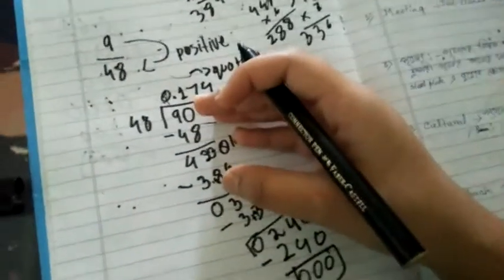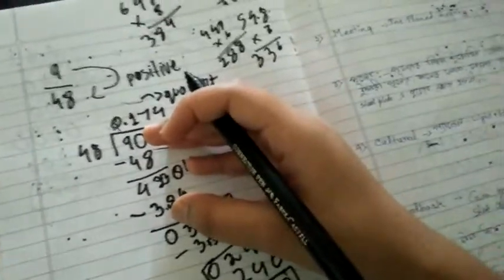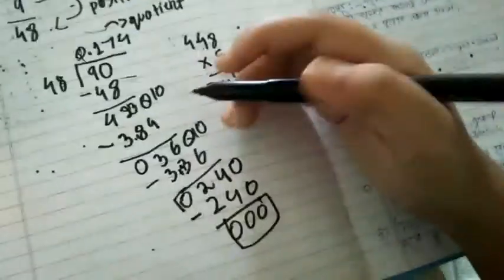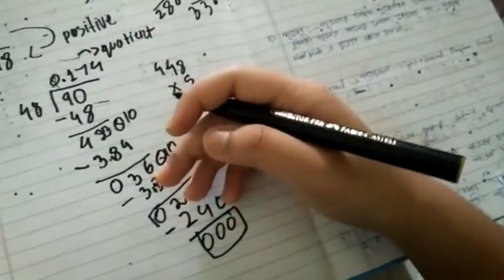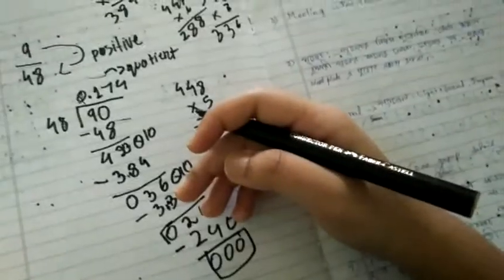But over here the remainder is not matching. I mean the remainder is not zero. So we are just replacing these zeros to the side to get the remainder as zero. All right, so I hope you all have learned something new.